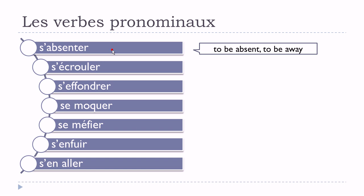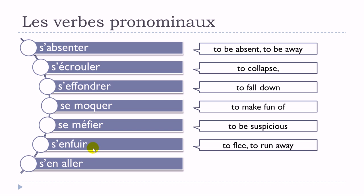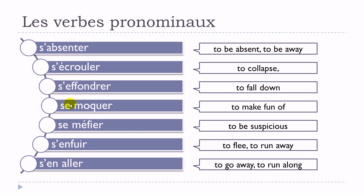Let's see the meanings: s'absenter, s'écrouler, s'effondrer, se moquer, se méfier, s'enfuir, s'en aller. You can see the translations on screen. Keep in mind that if you want to use them, you will have to use them with se, and that will modify the way you conjugate them — you can check the previous videos about that.